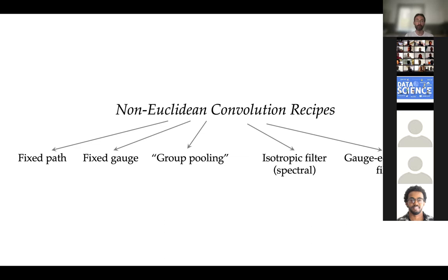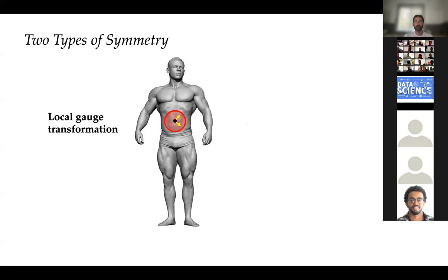There are several recipes to do something similar to convolutions on manifolds. We can fix the path — moving filters along a geodesic, which has been done in the literature. We can fix the gauge, the local system of coordinates. We can do group pooling, applying pooling over local transformations. We can do isotropic filters that are unaffected by this ambiguity. Or we can do gauge-equivariant filters, which will be the topic of Taco's next lecture. The two types of symmetry are the local gauge transformation and the global isometric deformation.